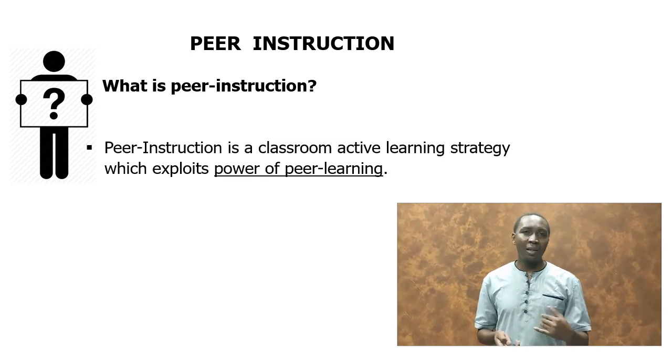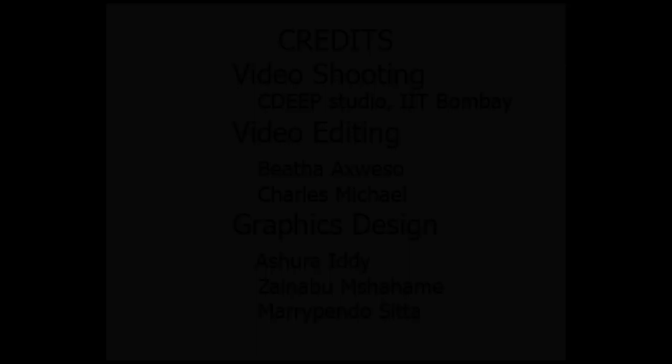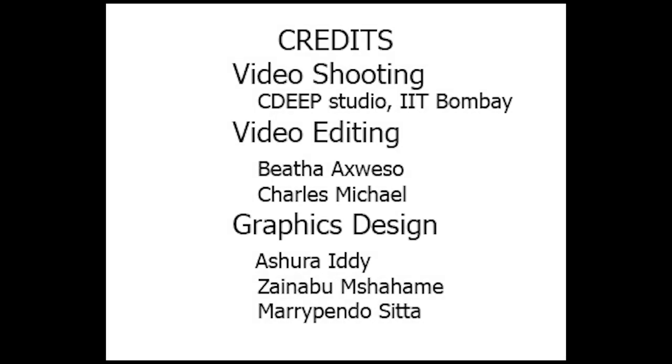Another strategy is what we call think-pair-share, which involves three stages. The first stage is the thinking part. The second stage is the pairing part, when they are paired two or three in a group. The third part is when you share to your classroom. We are going to discuss each one in detail and how each can help you improve your own classroom, in your own school, where you are teaching.